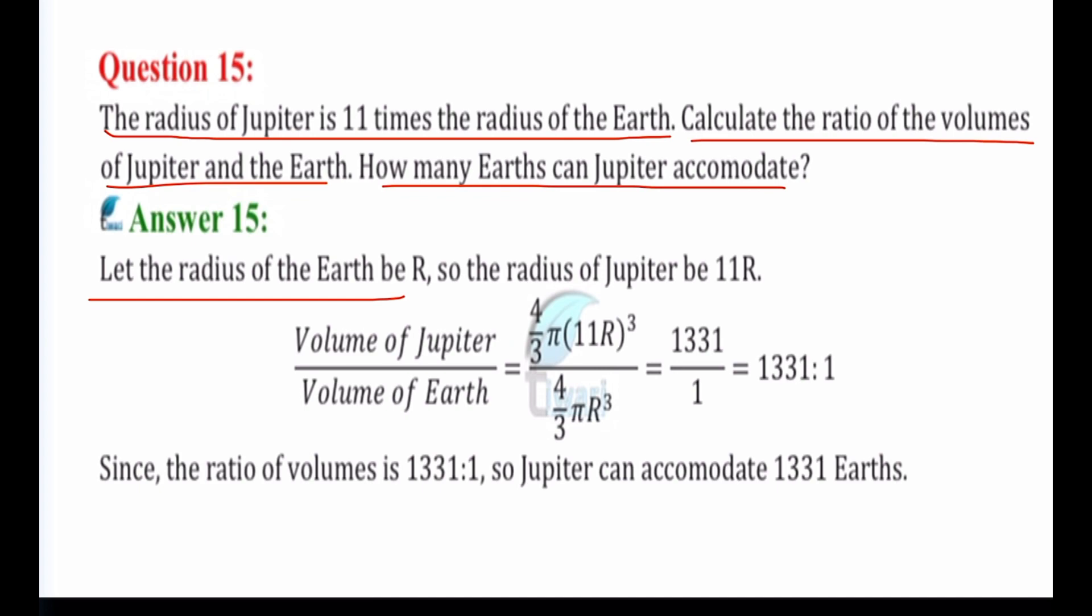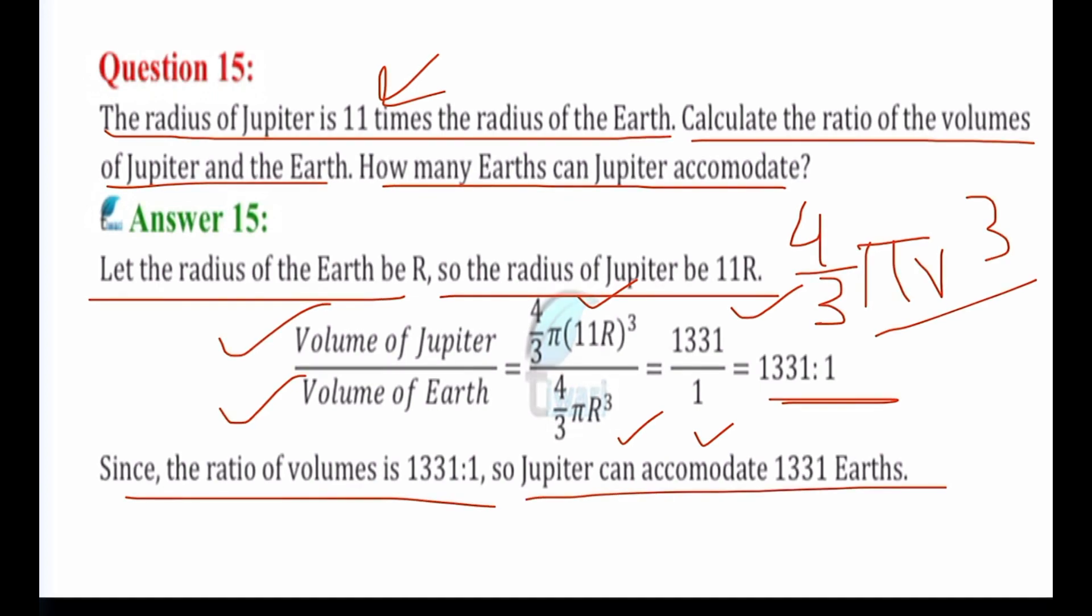Let the radius of the Earth be capital R, so the radius of Jupiter will be 11R. Volume of a sphere - the formula is 4/3 π R^3. So Jupiter - volume of Jupiter is 4/3 π (11R)^3 divided by volume of Earth 4/3 π R^3. So the answer is 1331 is to 1. 11^3 times. Since the ratio of volumes is 1331:1, so Jupiter can accommodate 1331 Earths.